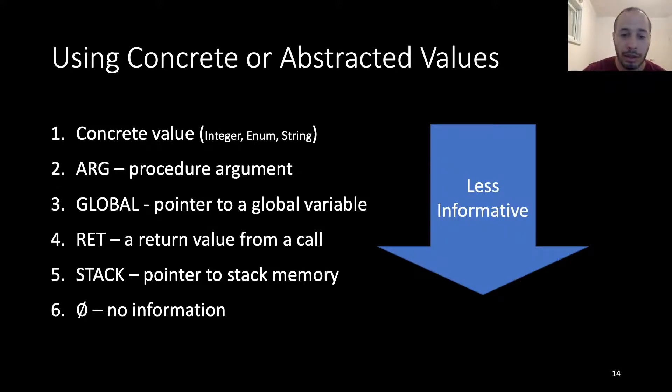As you can see, as we move down the list, the abstraction and the information we have are less informative. This is why we will give priority to higher abstractions in the list, and if we have concrete value, we will use that.